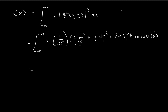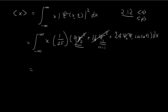In the last problem, problem 2.12, we found the expected value of x, the expected value of p, and a bunch of other expected values for the nth stationary state. You can see that multiplying x by these expressions is just finding the expected value of x for n=0 and n=1. In that problem, we found that these are always equal to 0, so we can essentially ignore these two terms.